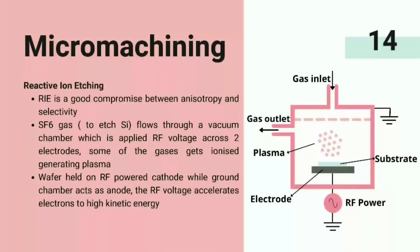Reactive ion etching (RIE) is a good compromise between anisotropy and selectivity. SF6 gas is used to etch silicon. The gas flows through a vacuum chamber which is applied with RF voltage across two electrodes, facilitating some of the gases to get ionized and generating plasma. The wafer is held on the RF-powered cathode while the grounded chamber acts as anode. The RF voltage accelerates electrons to high kinetic energy, and these high-energy electrons etch the substrate.